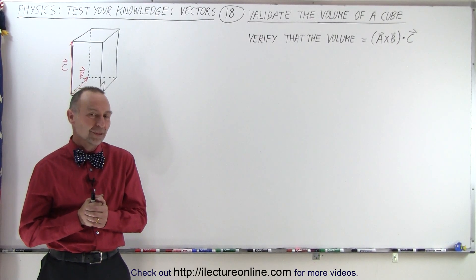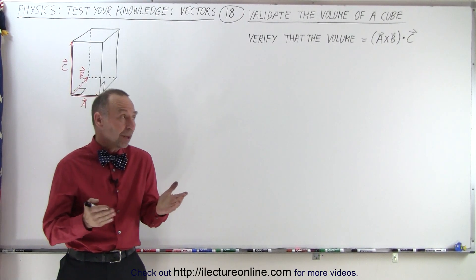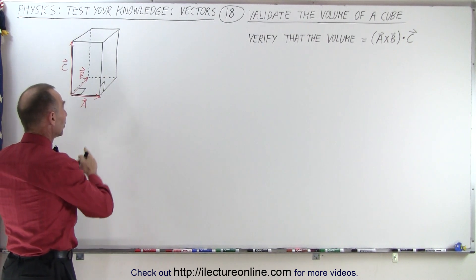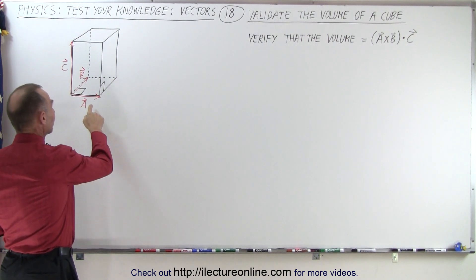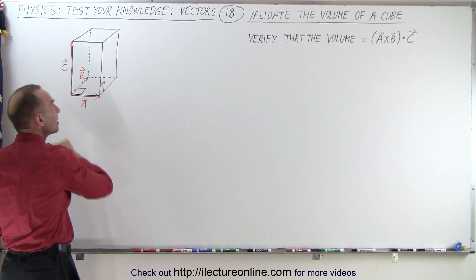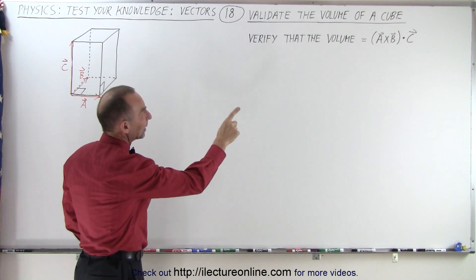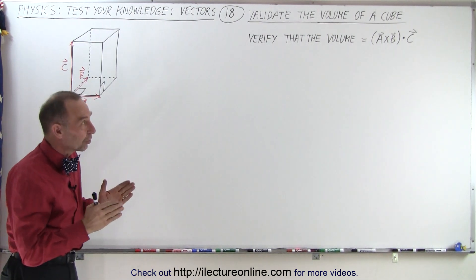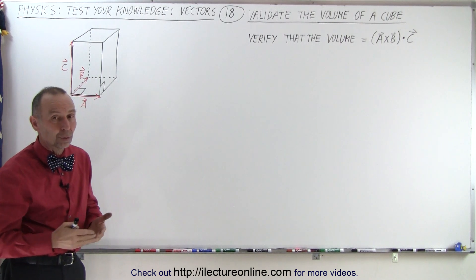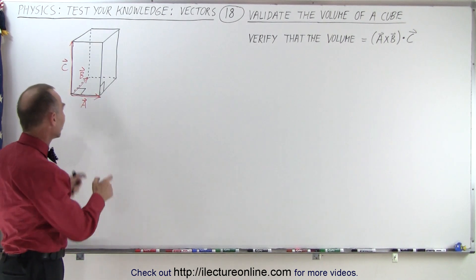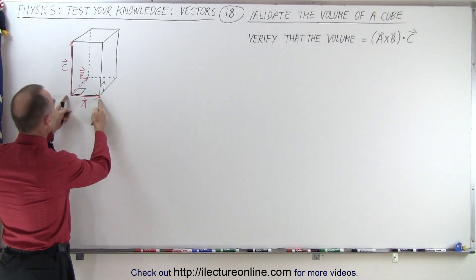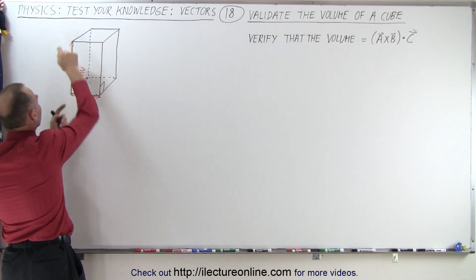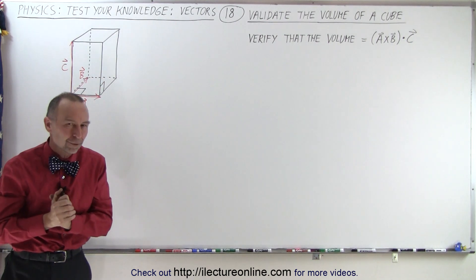Welcome to our lecture online. For this next problem we're supposed to show that the volume of this cube, where the sides are defined by vectors a, b, and c, can be found by taking the cross product of a and b and then taking that result and doing the dot product with vector c. Notice the length of vector a equals this side, the length of vector b equals this side, and the length of vector c equals this side.